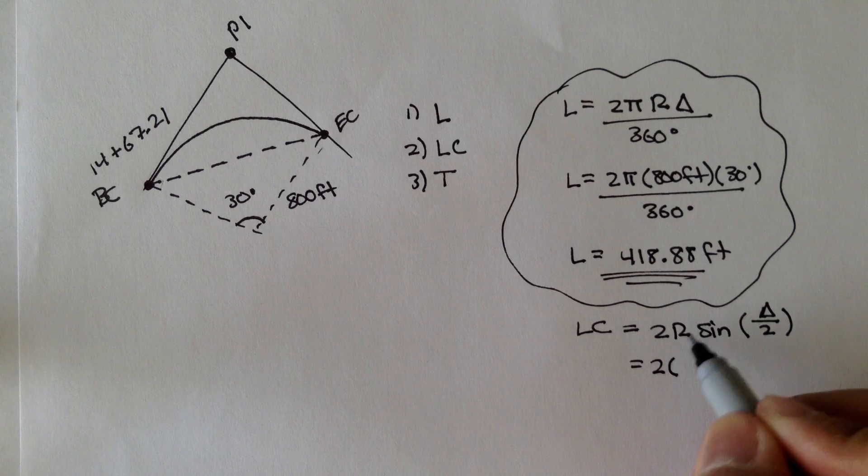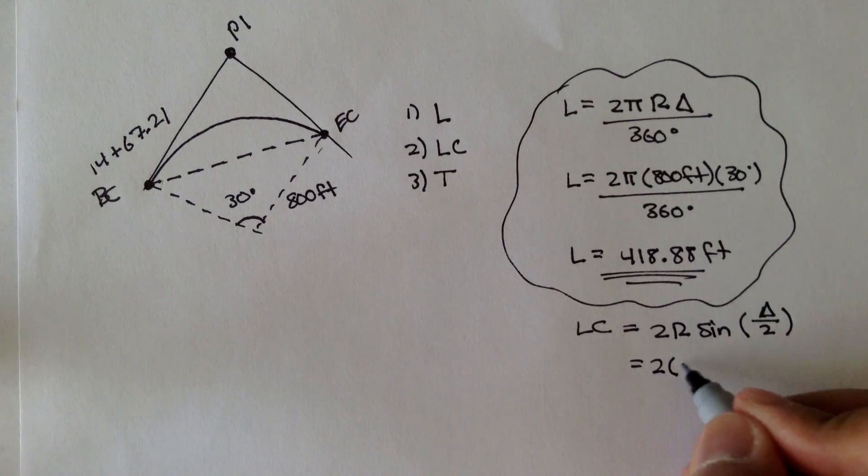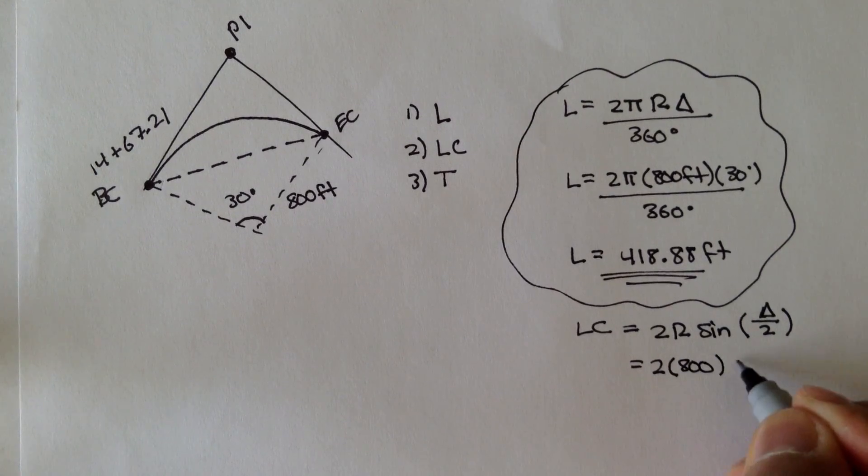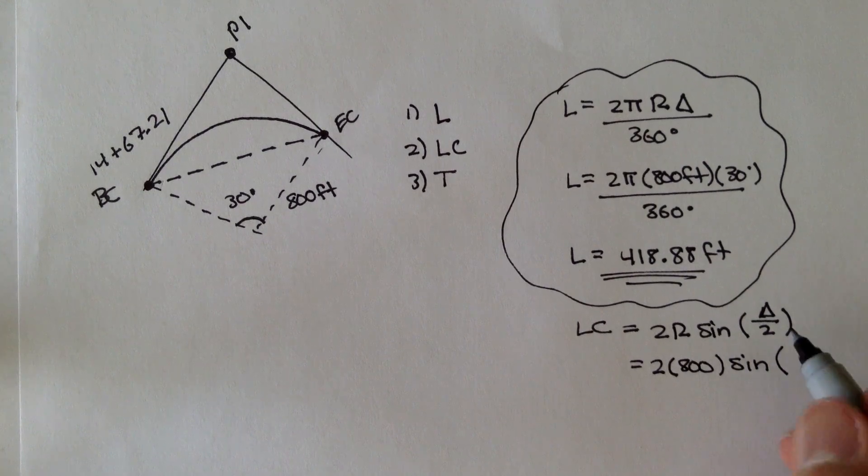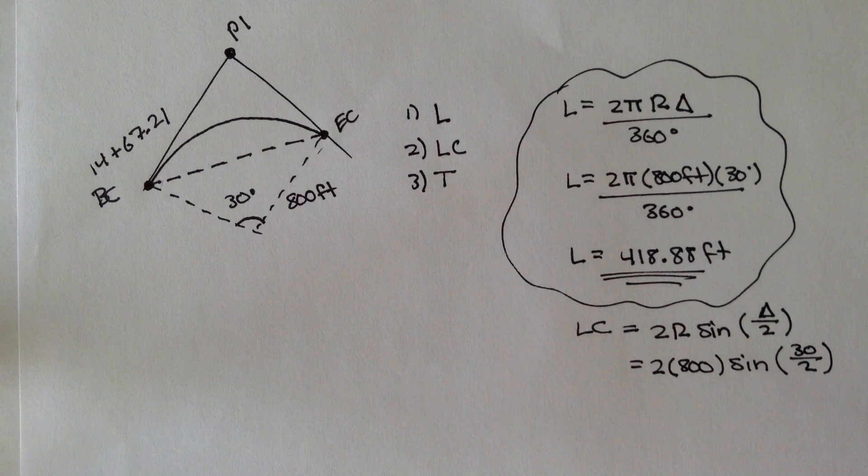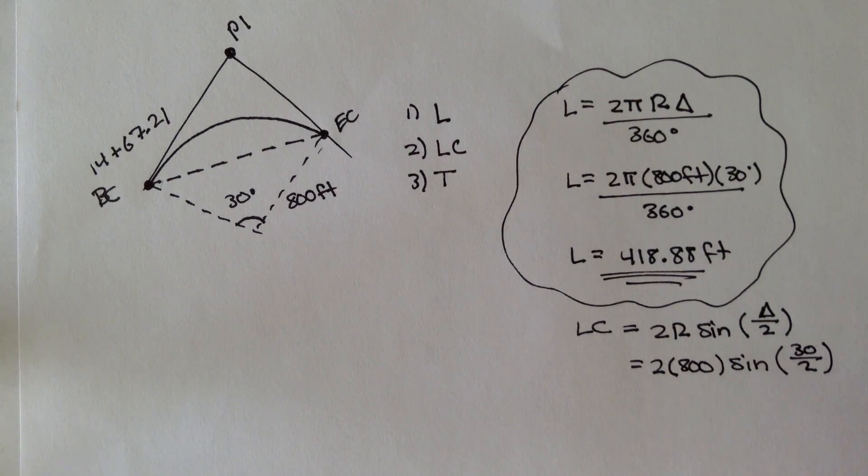So we plug this in. 2 times R, which is the radius. Again, it's 800 feet, times sine of the interior angle, which is 30, divided by 2.